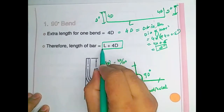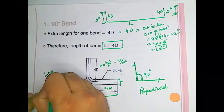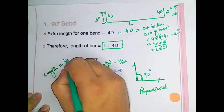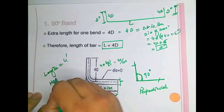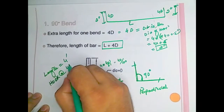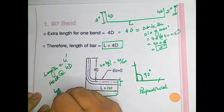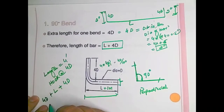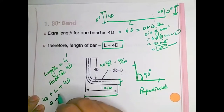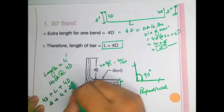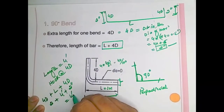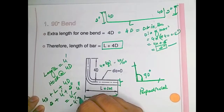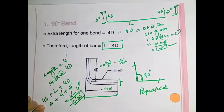For the total length of the bar, the formula is: total length = L + hooks on both sides. For example, if the bar length is 4 feet, we add 2 inches on one side hook and 2 inches on the other, giving us 4 feet and 4 inches, which is approximately 4.33 feet. This is the 90 degree bend calculation.